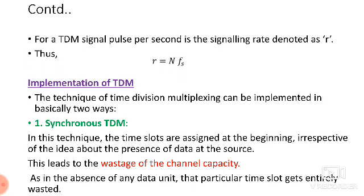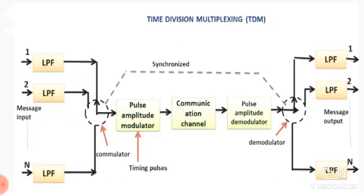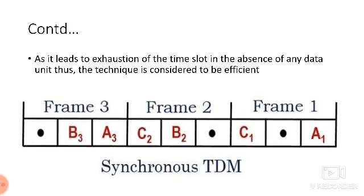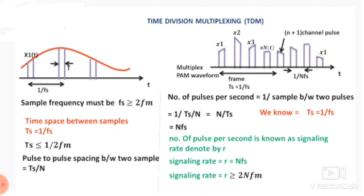TDM is implemented in two types: synchronous TDM and asynchronous TDM. The sampling rate r equals n·fs, where n is the number of slots. In synchronous TDM, frames are chosen in the same repeated order. In asynchronous TDM, the order cannot be predicted. The signaling rate r must be greater than or equal to n·fm, and ts ≤ 1/(2fm).